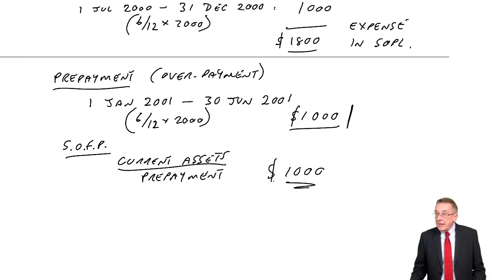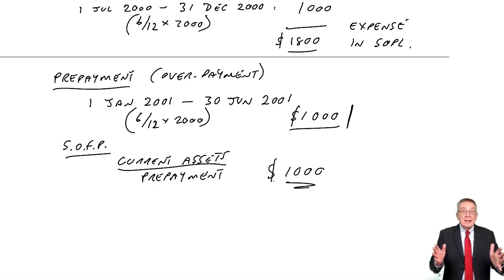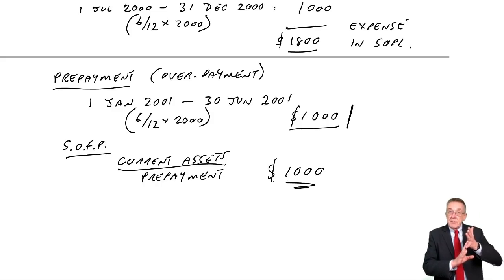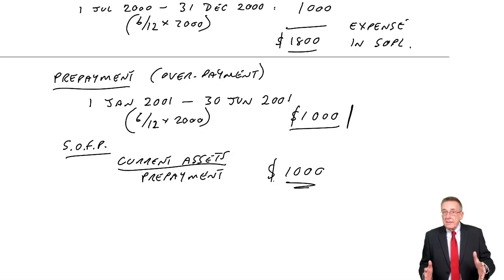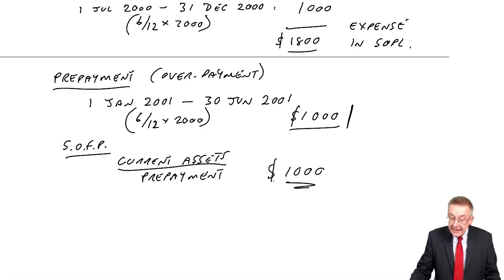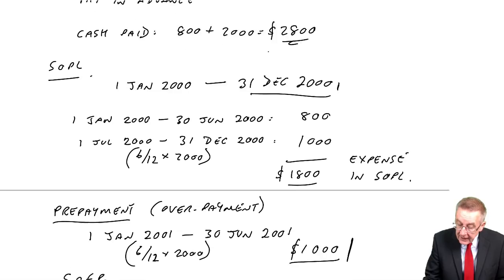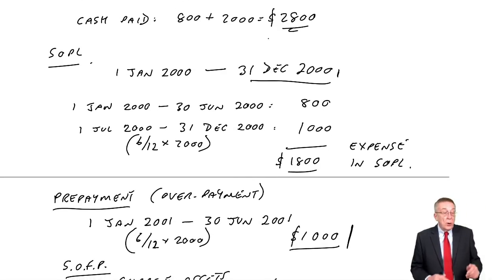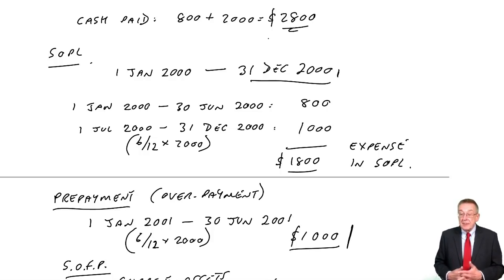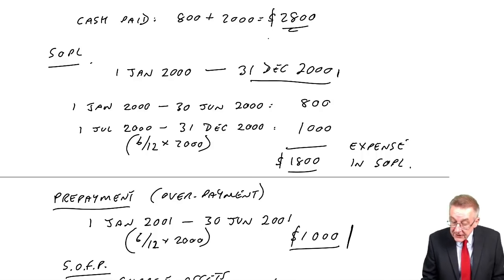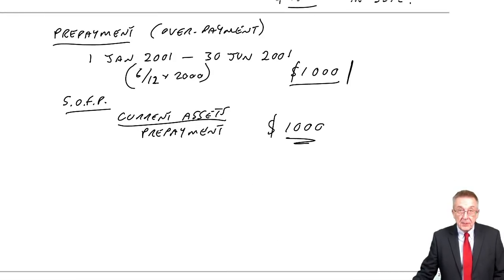I hope it makes sense. Vitally important, always, whatever's happening: what we want in the statement of profit or loss is the cost for our year. Here we've paid more, but the cost of insuring for this year was $1,800. If we have overpaid or paid in advance — paid part of next year — the amount of the overpayment or the prepayment is a current asset in the statement of financial position.